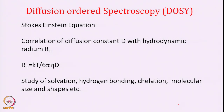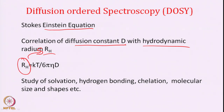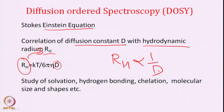Diffusion follows the Stokes-Einstein relation, which correlates diffusion constant D with hydrodynamic radius RH. The relation is: RH = kT / (6π η D), where k is Boltzmann's constant, T is temperature, η is viscosity, and D is diffusivity. R and D are inversely correlated: if D is high, RH is low; if D is small, RH is more. We can calculate D from DOSY and therefore calculate RH. This can be used to study solvation, hydrogen bonding, chelation, and molecular shape and size.